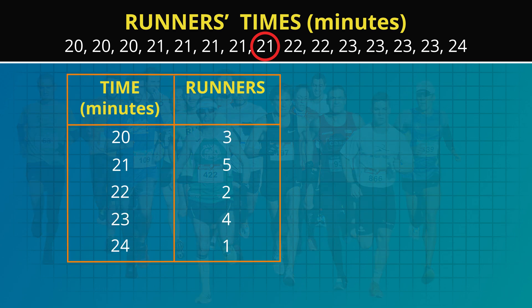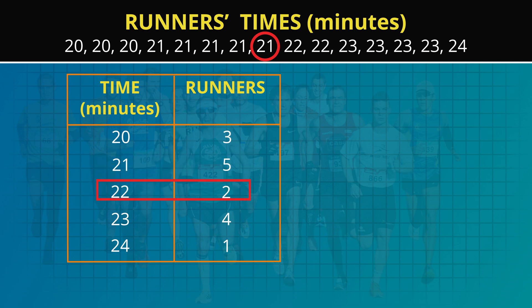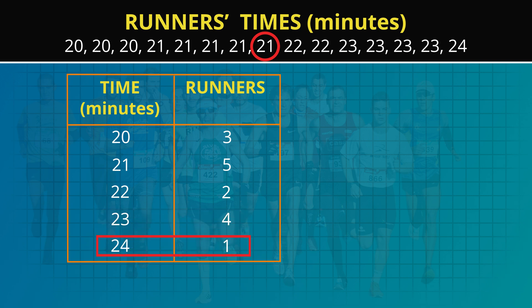Let's organize these race times into a table from smallest to largest. Three runners ran the race in 20 minutes, five runners took 21 minutes, two runners took 22 minutes, four runners took 23 minutes, and the slowest runner took 24 minutes.